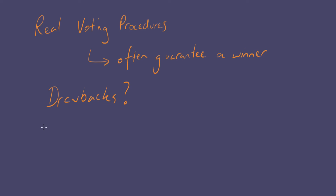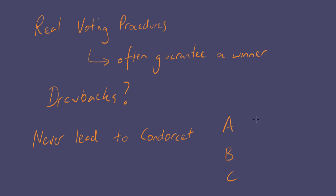You can study individual methods and note drawbacks of individual methods, but to reach a general conclusion, this is where we use the mathematical power of social choice theory to generalize about what's going to be good or bad about a whole class of voting procedures. One of the key things Kenneth Arrow did in his famous proof is he assumes that the voting procedure will never lead to the Condorcet paradox — it will never lead to a case where we don't get a ranking of the options.